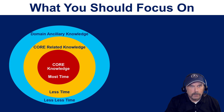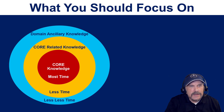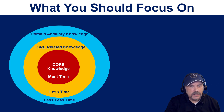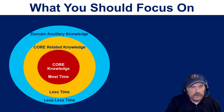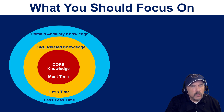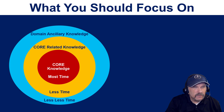Outside of that you have what I call domain ancillary knowledge. Using the Python developer example, that might be things like DuckDB or relational databases. Depending on what exactly you intend to do, the ancillary knowledge will be different. Core knowledge is something you need every day on the job. Core related knowledge is something you'll probably need many days. And domain ancillary knowledge is things you may or may not really need — might come in handy, but you may never really use it.